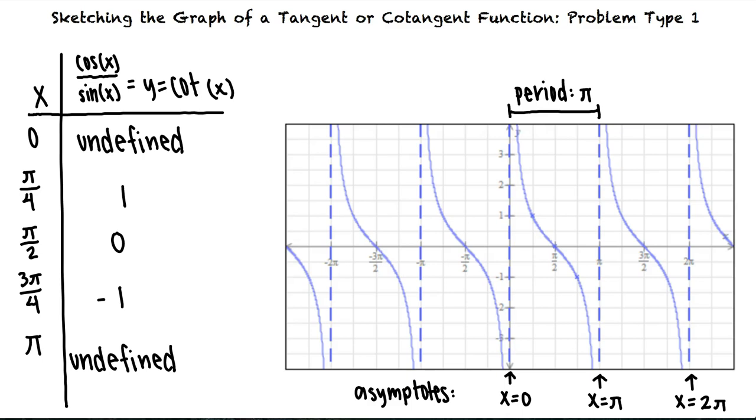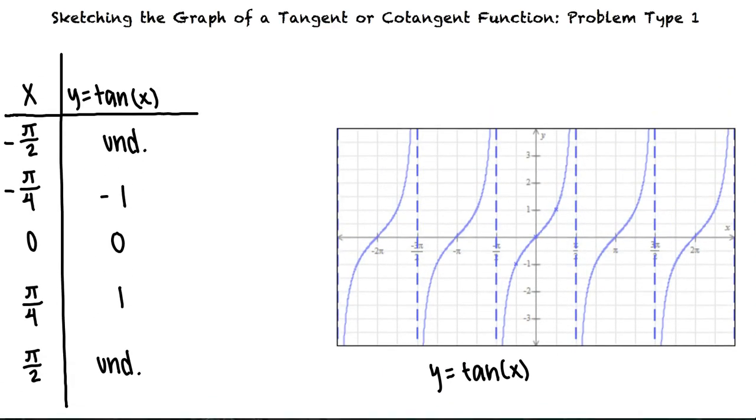So what if we had to incorporate transformations into our graph? Let's go back to our original tangent function and now let's say we want to graph the function y equals one half tangent of x plus pi over 2.